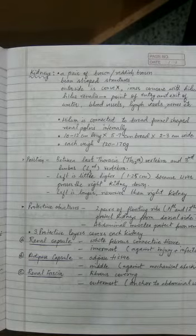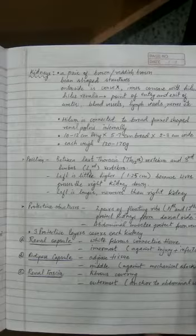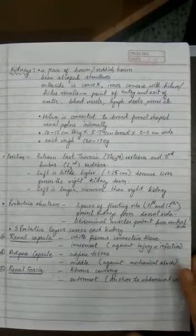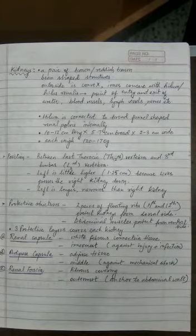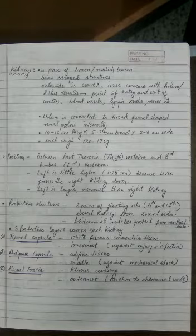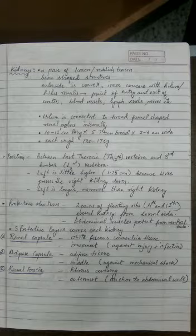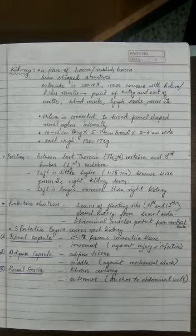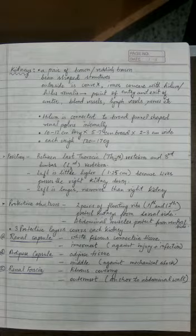We discussed the protective structures of the kidney - the two pairs of floating ribs, the 11th and 12th, protect the kidney towards the dorsal side and the abdominal muscles protect it from the ventral side. The kidney itself is covered with three protective layers: renal capsule and renal fascia (the outer and inner made of fibrous tissue) and the middle adipose capsule made of adipose tissue as a shock absorber.